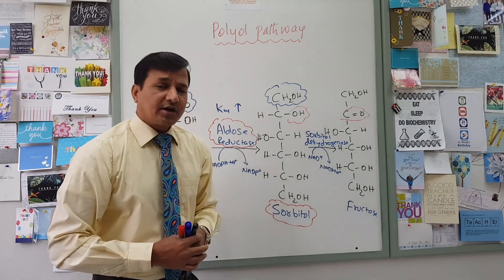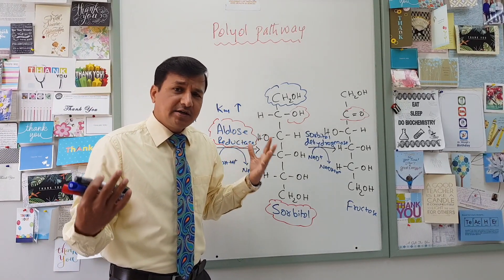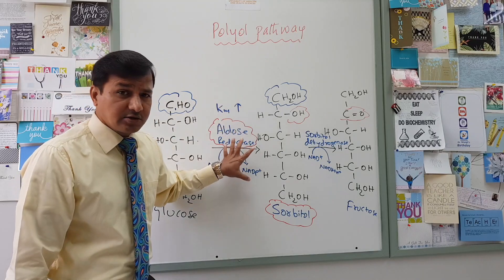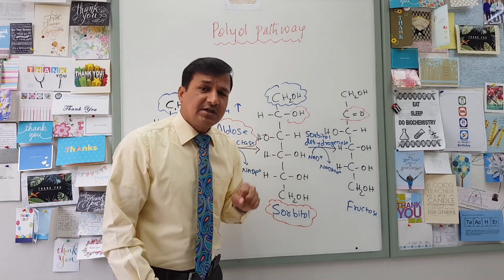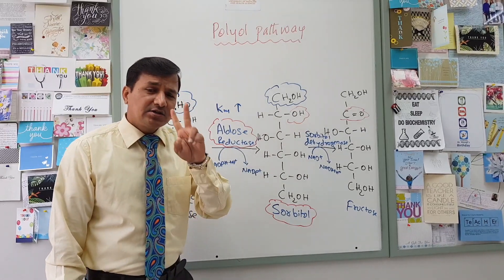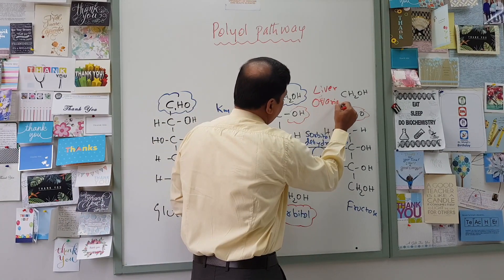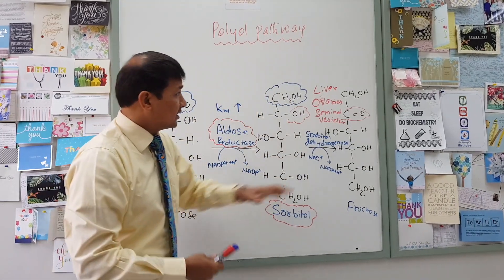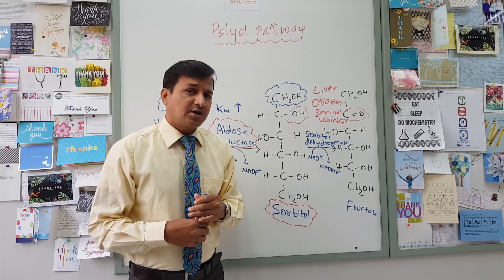However, there is a catch. Most tissues — whether insulin-dependent or insulin-independent — express high quantities of aldose reductase, but very low levels of sorbitol dehydrogenase. Only three tissues sufficiently express sorbitol dehydrogenase: liver, ovaries, and seminal vesicles. All other tissues have low expression of sorbitol dehydrogenase.